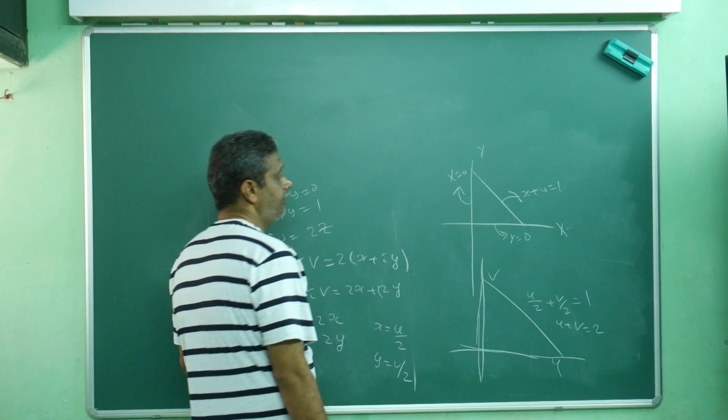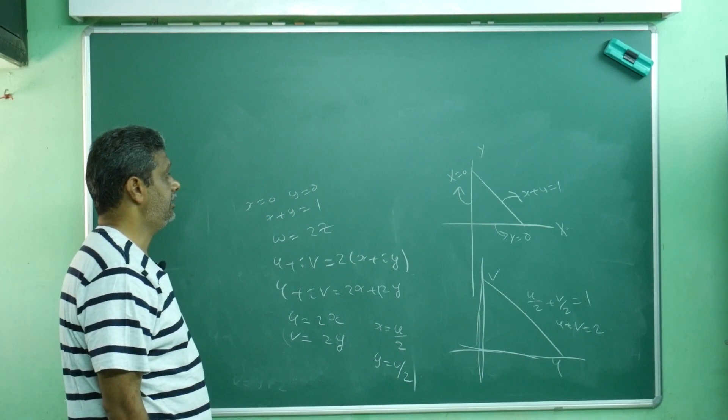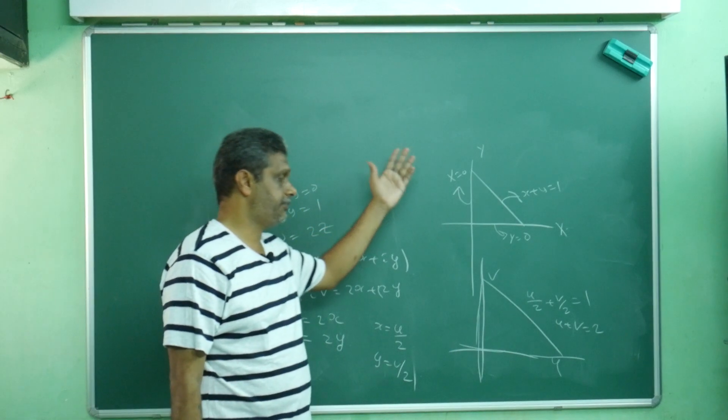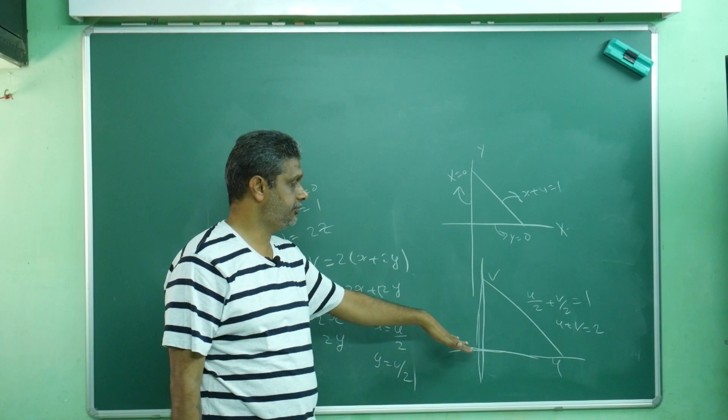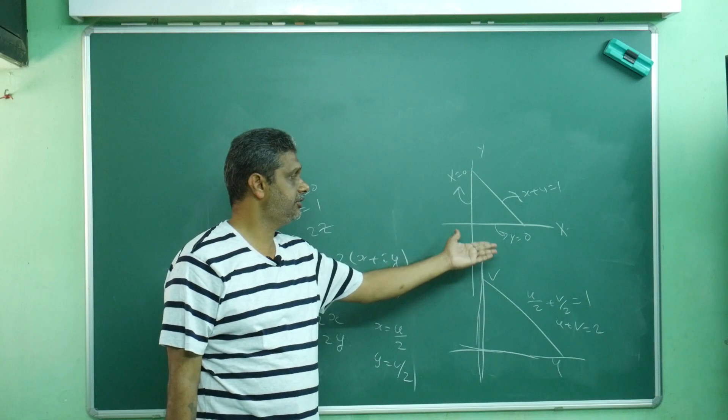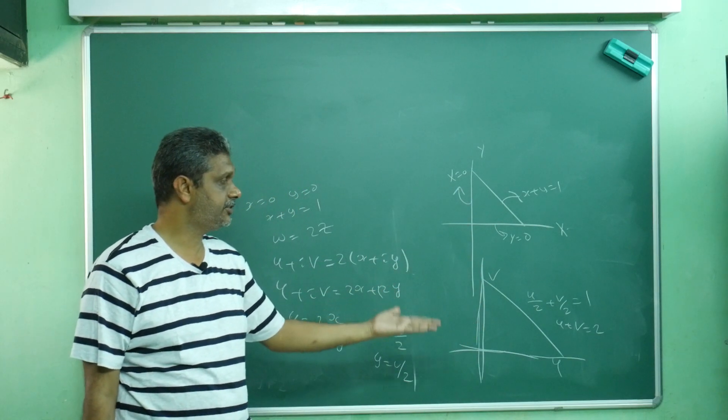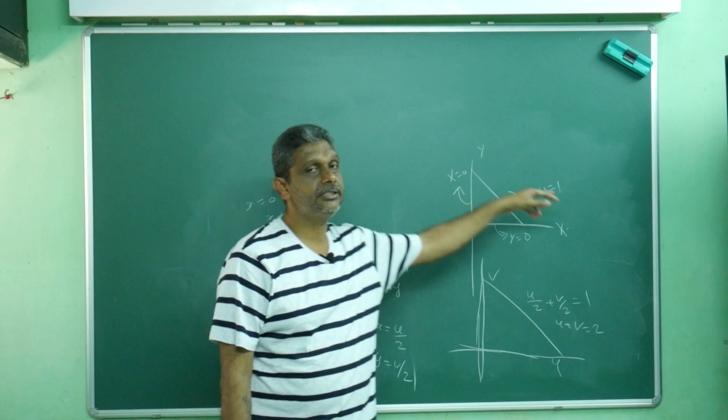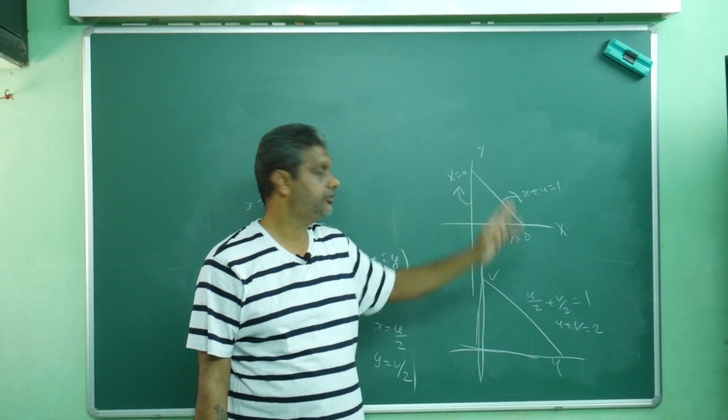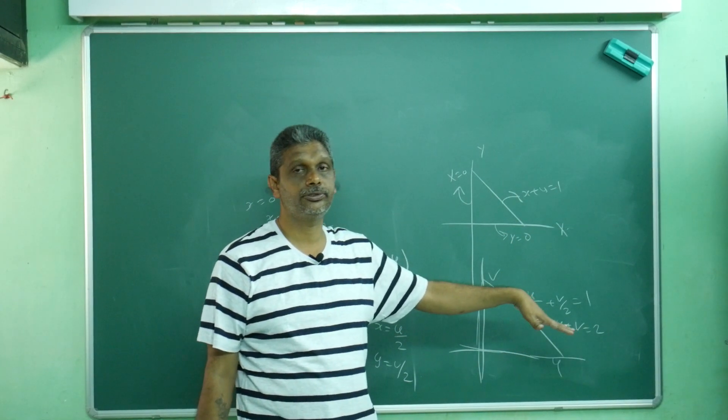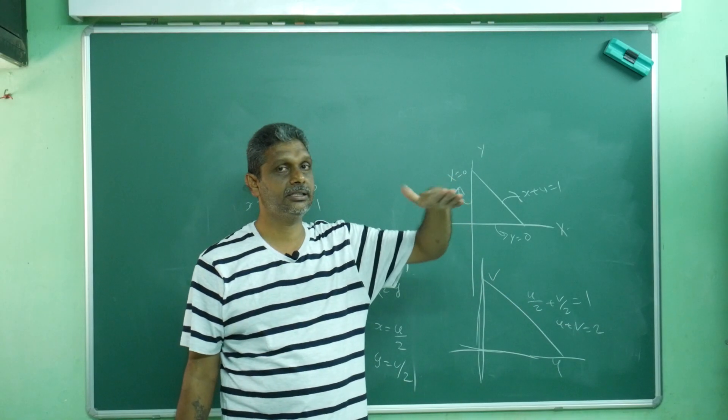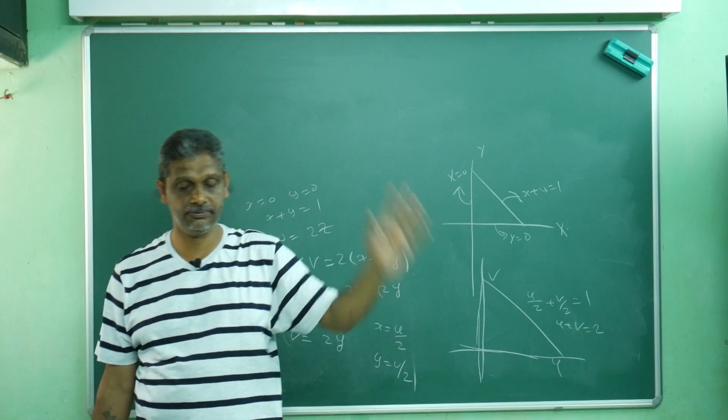In z plane x = 0 maps onto u = 0, y = 0 maps onto v = 0, x + y = 1 maps onto u + v = 2. See, something is expanding, magnification and rotation will occur.